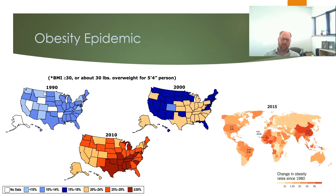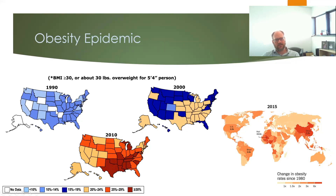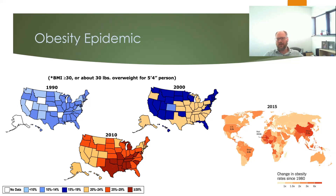Looking at BMI trends in the US since 1990, there has been a progressive shift toward higher and higher BMI levels over this period — we are getting fatter. This isn't a problem that just applies to North America; it goes all around the world. Everywhere is experiencing this shift toward obesity, which is driven by over-nutrition. We have too many calories available to us now, we eat too much, and as a result we are experiencing health problems that are a direct result of hyper-nutrition.